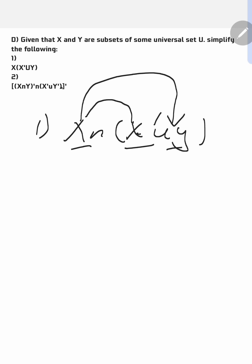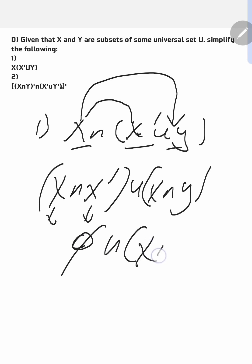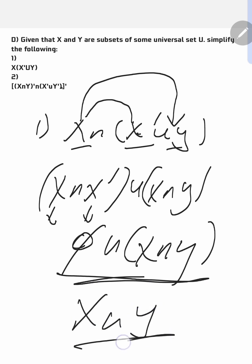What I mean is this: I'm going to have X intersection X complement, then union, then X intersection Y. Now, X intersection X complement — what is the intersection of A and A complement? The intersection requires terms found in both sets. Here, X and the complement of X have nothing in common, because a complement means something that is not there. So X intersected with its complement is an empty set. Union X intersection Y. If you bring this together, it's just the same as X intersection Y. That's your answer.